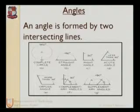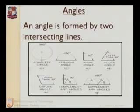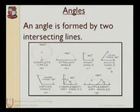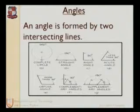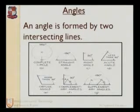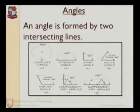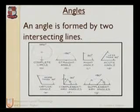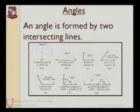An acute angle is less than 90 degrees, as represented in D. An obtuse angle is more than 90 degrees but less than 180 degrees, as represented in E. Complementary angles sum to 90 degrees, and supplementary angles sum to 180 degrees, as represented in G.